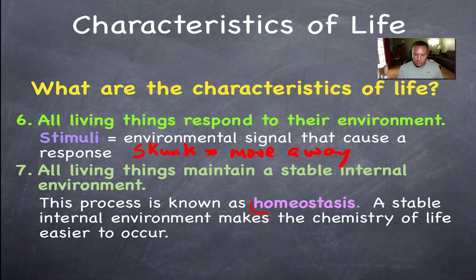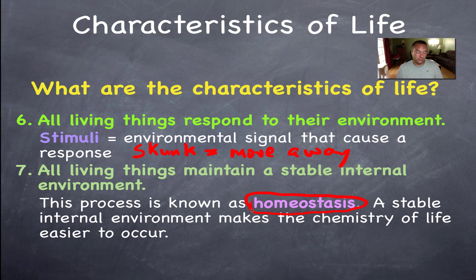All living things maintain a stable internal environment — this process is known as homeostasis. We'll talk about homeostasis in almost every chapter this year, because maintaining a constant, stable environment is critical for all the chemical reactions that make life work. For cellular respiration inside the mitochondria, the pH level, oxygen level, and temperature all need to be correct. Getting outside that range can lead to difficulty and sometimes death.